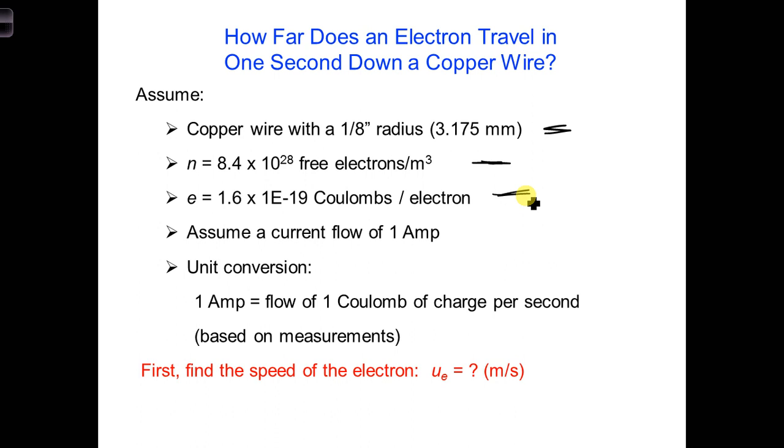Each electron has a charge of 1.6 e to the minus 19 coulombs. And assume for simplicity that we have one amp of current flowing along the wire. Lastly, I'll tell you that, based on measurements, we know that 1 amp is equal to 1 coulomb of charge per second. Go ahead and see if you can determine the speed of each electron on these conductors.